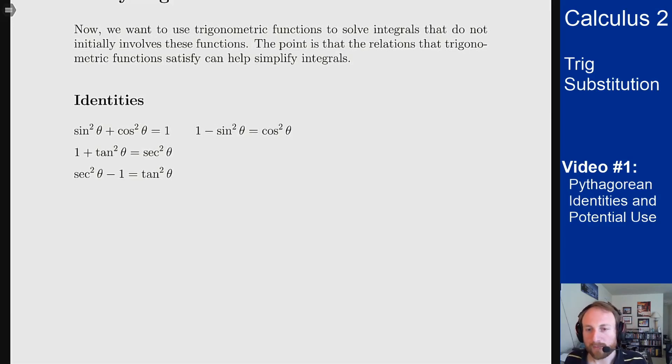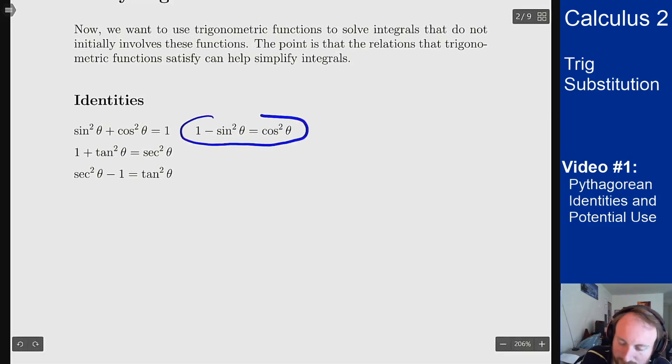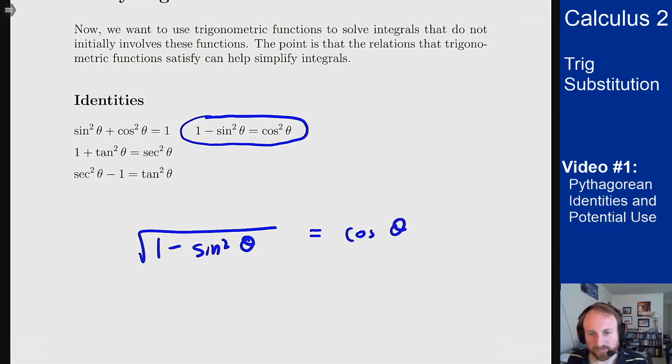So what benefit do these have for us? Well, the important thing is if you look at the way I've rewritten the 1 here as 1 minus sin squared equals cosine squared. The way you want to think about this is if I had square root of 1 minus sin squared of theta in my problem, this becomes a cosine of theta, which is a nice thing to handle. There's no square root anymore, it's on its own, it's more than happy wherever it is.